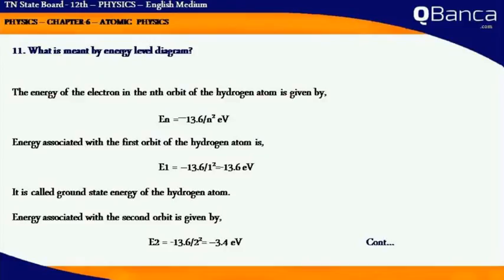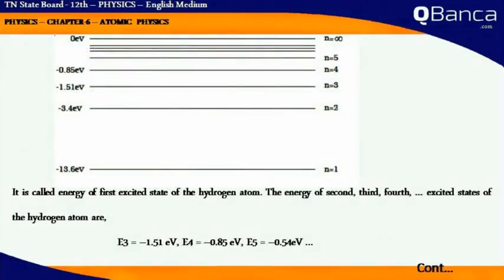The energy associated with the second orbit is given by E2 = -13.6/2² = -3.4 eV. It goes up to n = infinity equal to 0.